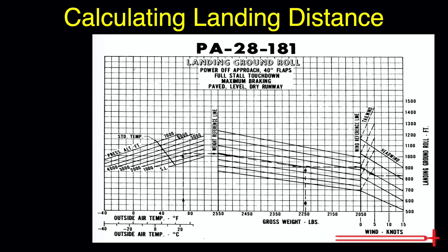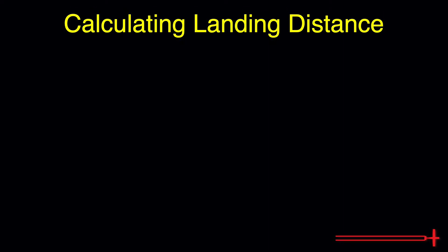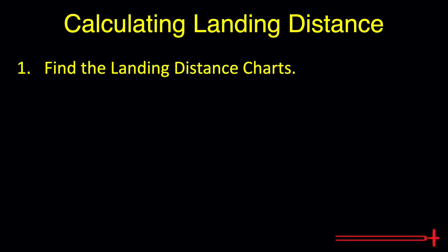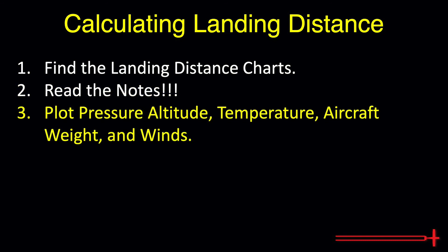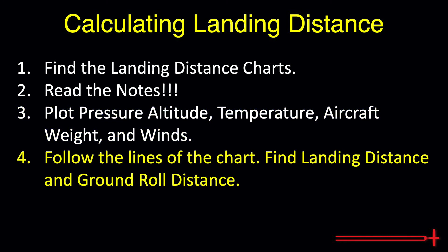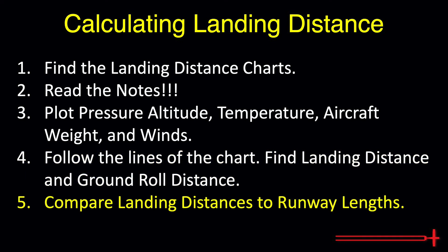Let's recap the steps to find landing distance in the Piper Archer. Step 1: find the landing distance charts. Step 2: read the notes. Step 3: plot the lines for pressure altitude, temperature, aircraft weight, and wind. Step 4: follow along the lines on the chart to find both distance to clear a 50-foot obstacle and ground roll distance. Step 5: compare those distances to runway lengths to ensure a safe landing.